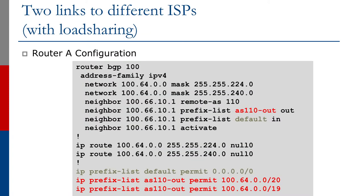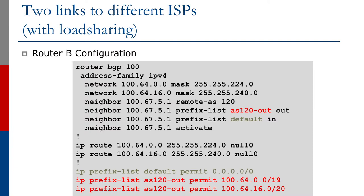Let's look at router A configuration. We're now originating the /19 aggregate and one /20, so the prefix list allows the aggregate and the /20 outbound. There's another prefix list allowing just the default route in, similar to what we saw in the earlier examples. Router B announces the aggregate out plus the second /20, as we've seen earlier.